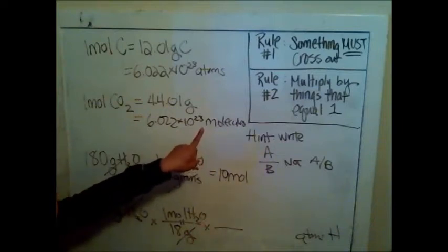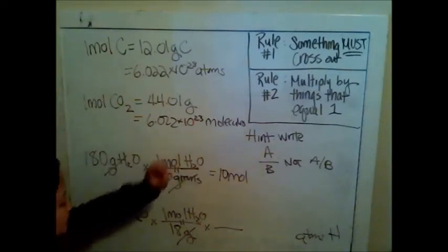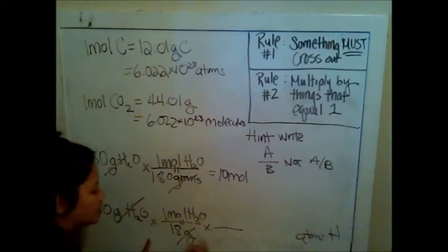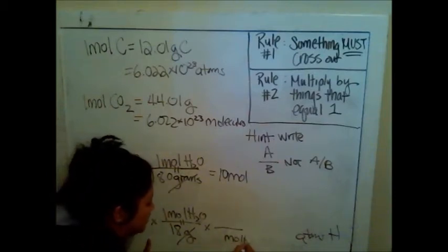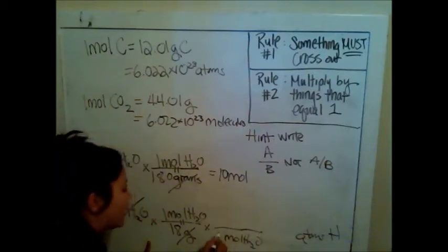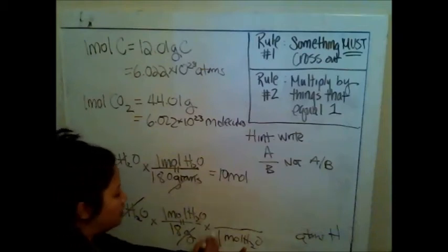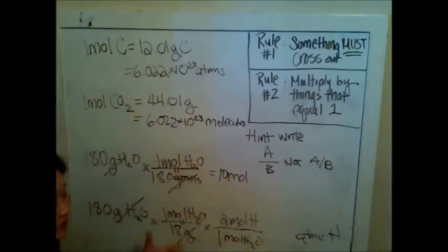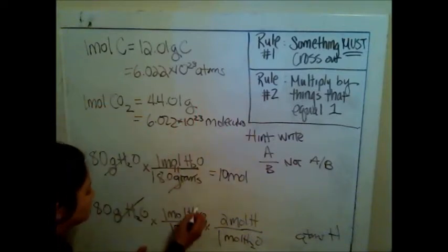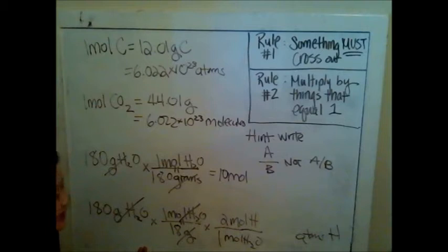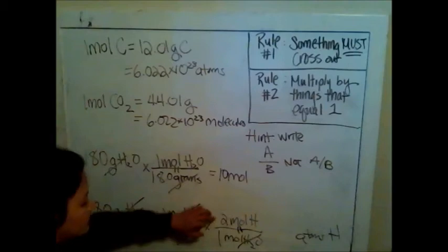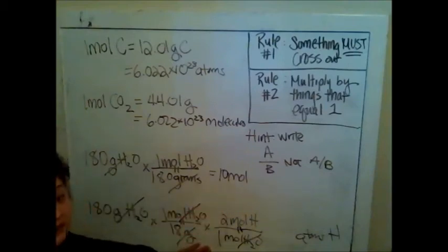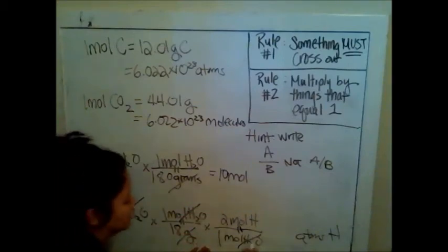My rules say something must cross out. So if I have moles of H2O up here, I must have moles of H2O down here. For every 1 mole of H2O, I have 2 moles of hydrogen. That's a ratio that's always true, so we could also consider that an equal statement. Rule number one, something must cross out. Moles of H2O crosses out with moles of H2O. Rule number two, this must be a true statement. There are 2 moles of hydrogen for every 1 mole of H2O, so also true.